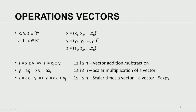Z equals AX plus Y is an operation where the ith component Zi equals A times Xi plus Yi. This is called SAXPY — scalar times a vector plus a vector. These are the basic operations on vectors that we will be dealing with.